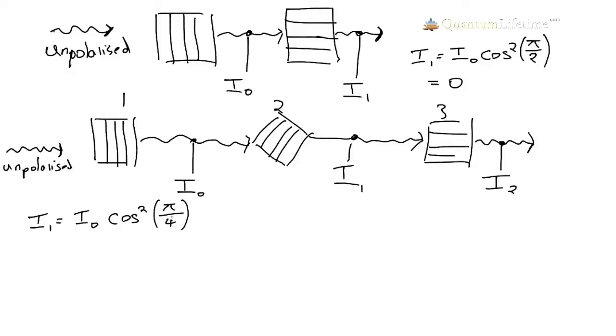Now cosine of 45 degrees or pi over 4 is actually 0.7 and if you square it you get exactly 0.5. So it's going to be equal to 0.5 of I nought. So I1 is equal to 0.5 of I nought.